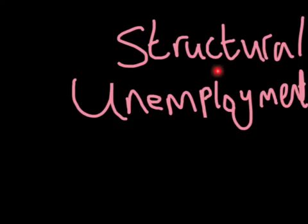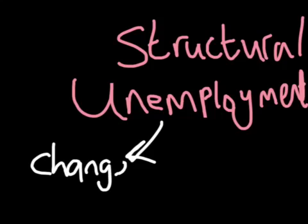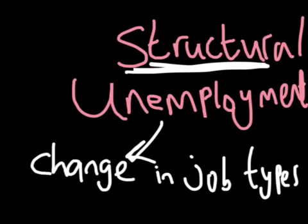The second type is structural unemployment, where the whole structure of the economy is changing and job types change. An example of this is in the 1970s when many miners were made unemployed because the structure of the economy was shifting toward more office-type jobs. Structural unemployment is usually quite bad, and you can often find it in developing countries where the types of jobs in that country start to change.